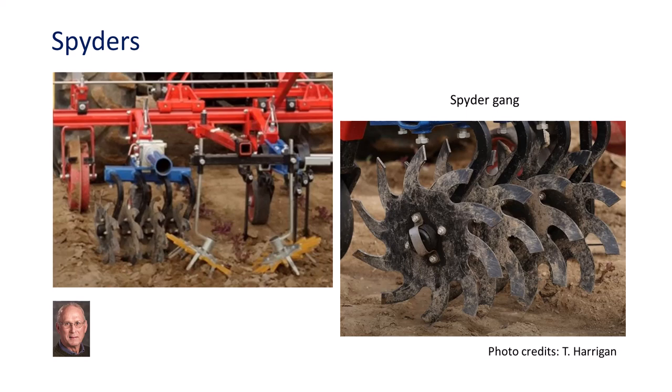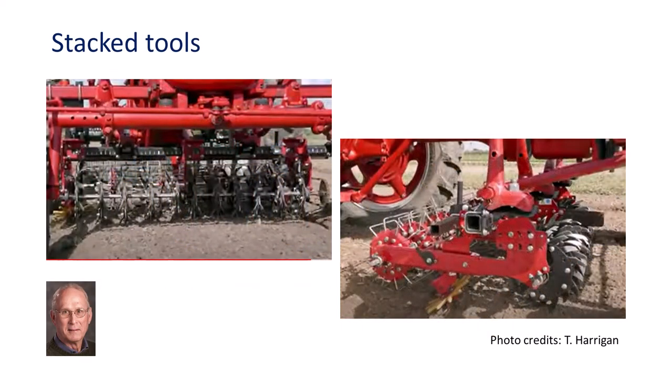Gangs of four or five spider wheels loosen and move soil between the rows while finger weeders dislodge small weeds between the plants in the row. Spider gangs move soil parallel to the crop rows, or adjust to throw soil toward or away from the row, and work similarly to rolling cultivator wheels. Spider gangs can replace the front gang of a basket weeder and break a crusted soil surface more aggressively, and may work better in stony ground.